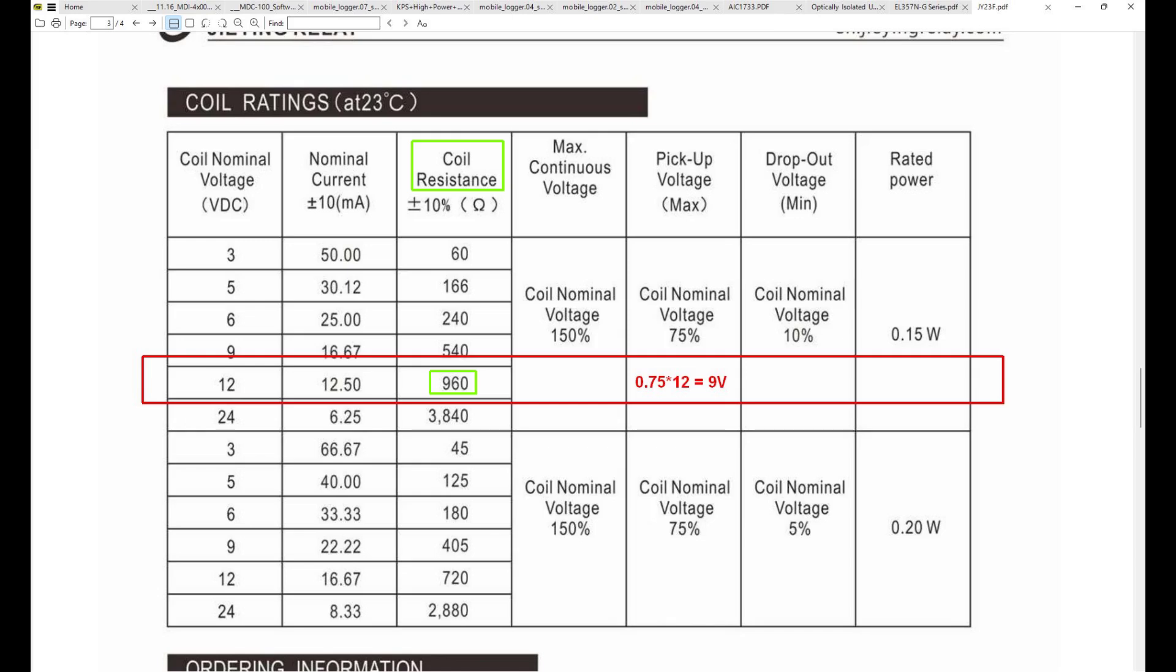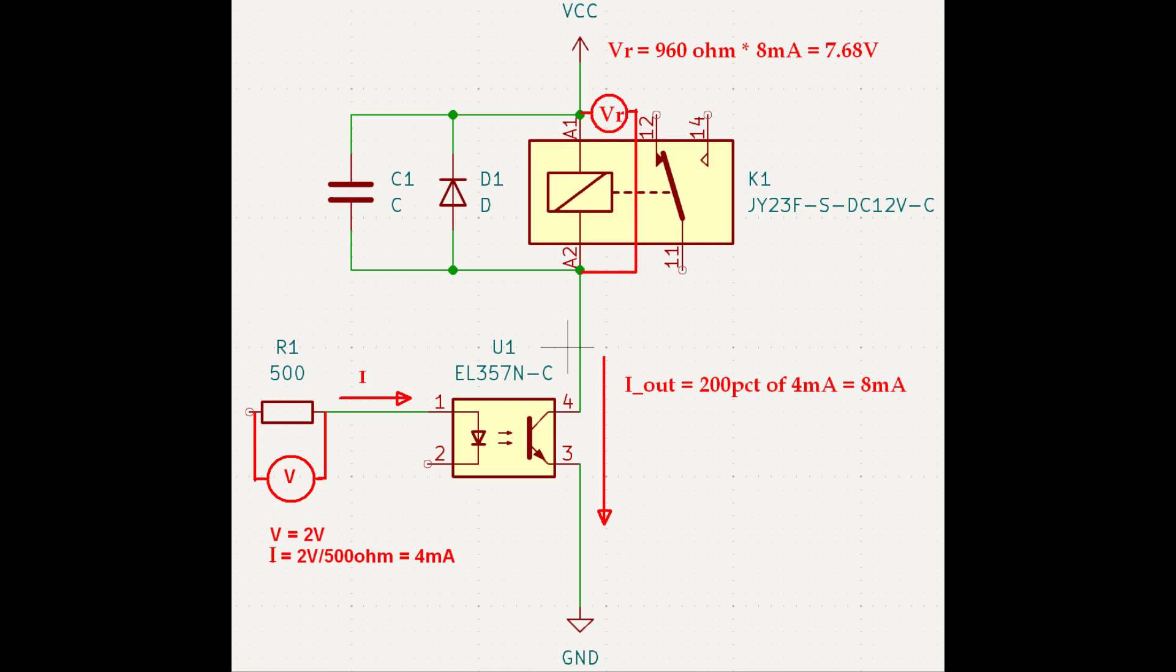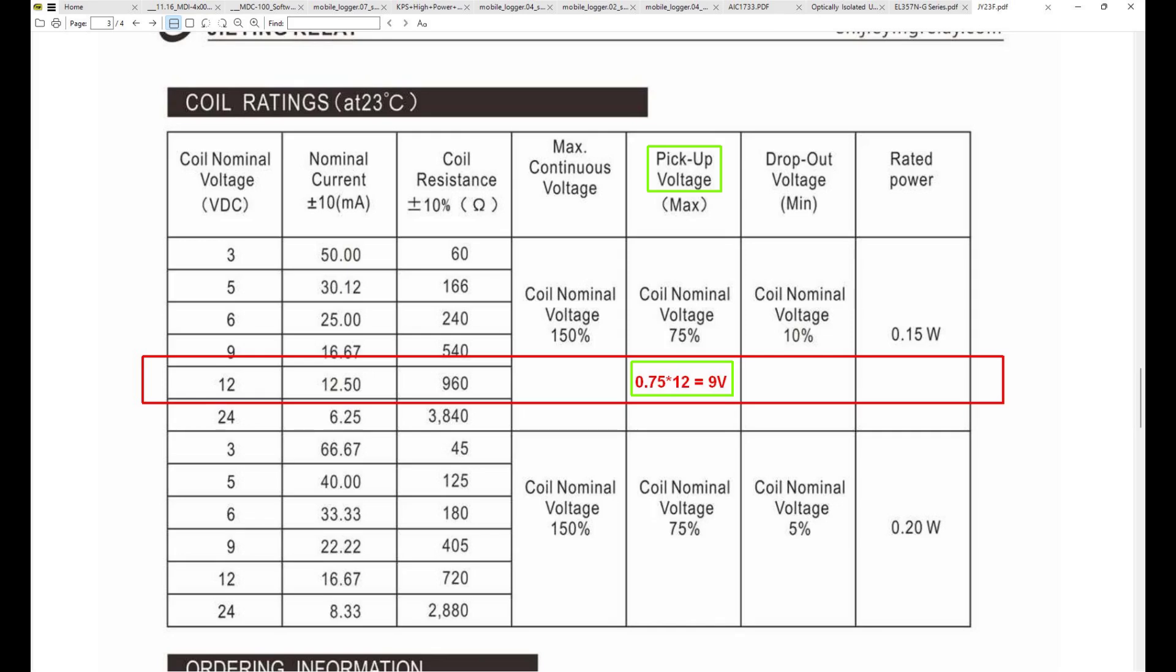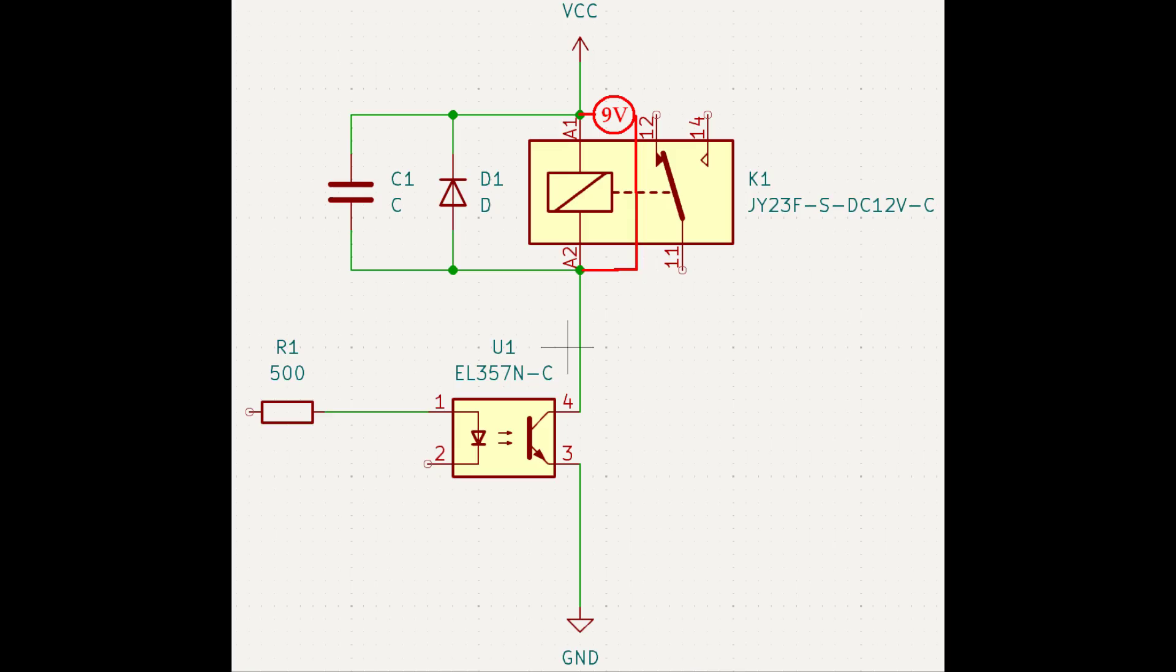If you calculate the resulting voltage over the relay with the specified coil resistance you get 7.68 volts. The rest of the voltage is eaten by the optocoupler. The datasheet of the relay states that the pickup voltage, which is the point at which the relay toggles, is 9 volts, so the 7.68 volts is too low to trigger the relay. In Mario's case he measured about 9 volts on his non-working relay, so just on the edge of working or not working. In some cases it will work, in others it won't.